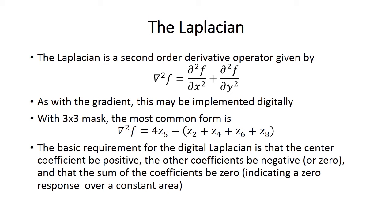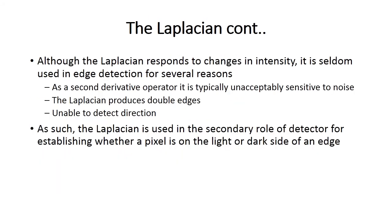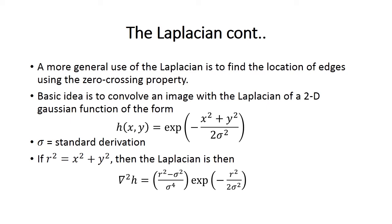The Laplacian of any image can also be found using a 3×3 mask. The most common form is ∇²f = 4z5 minus the neighboring values. The basic requirement for the digital Laplacian is that the center coefficient be positive. Although the Laplacian responds to changes in intensity, it is seldom used in edge detection for several reasons: as a second-order derivative operator, it is unacceptably sensitive to noise; it produces double edges and is unable to detect direction. The Laplacian is used in a secondary role to determine whether a pixel is on the light or dark side of an edge — i.e., toward 0 or toward 255.